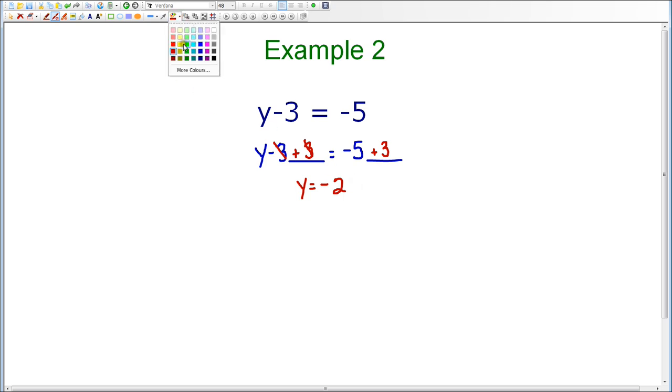Now it's very important to check your answers as you solve these equations to make sure that your answer is correct. So in order to do that, we're going to take the original equation that we were given, y minus 3 equals negative 5, and I'm going to substitute negative 2 for the y variable.